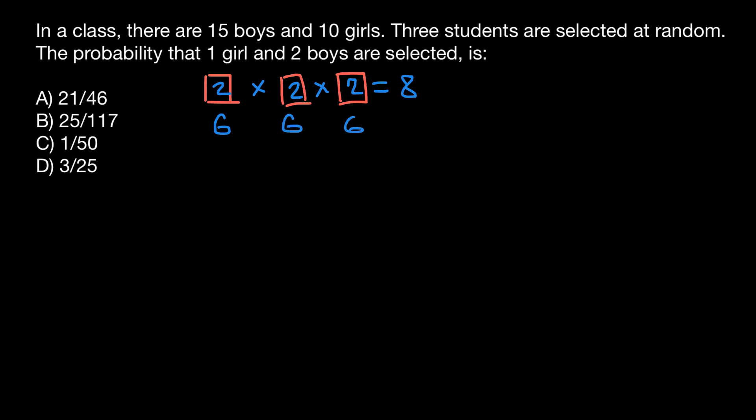We also can choose two girls and one boy: a girl, a girl, and a boy. But we also can have another combination: a girl, a boy, and a girl. And a boy, a girl, and a girl.